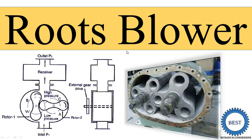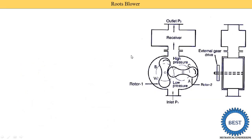The roots blower is also known as the roots compressor. In this image you can see it is known as a root or a lob. This image is indicating the three-lob blower and this image is indicating the two-lob. This part or shape is known as the lob — in some books it is denoted as a rotor, and in some books it is denoted as a root.